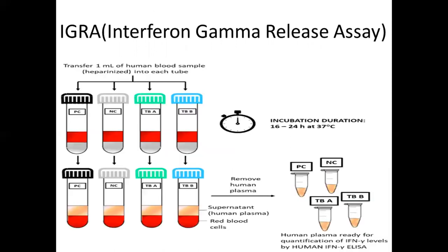The IGRA test — interferon gamma release assay — is based on the concept that the immune system exposed to tubercular bacilli produces interferon gamma. A patient's blood is exposed to tuberculosis antigens, and if the patient has already been exposed to tuberculosis bacilli, the immune system will produce interferon gamma which is then measured. This test is used to determine if the patient has latent tuberculosis.